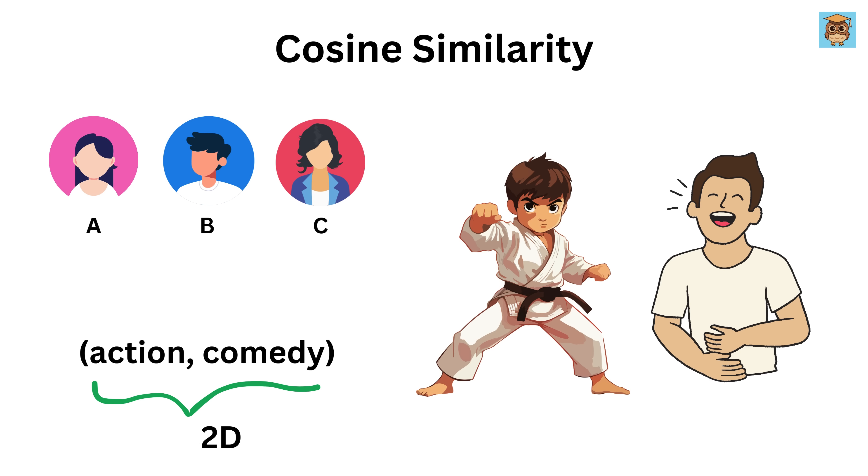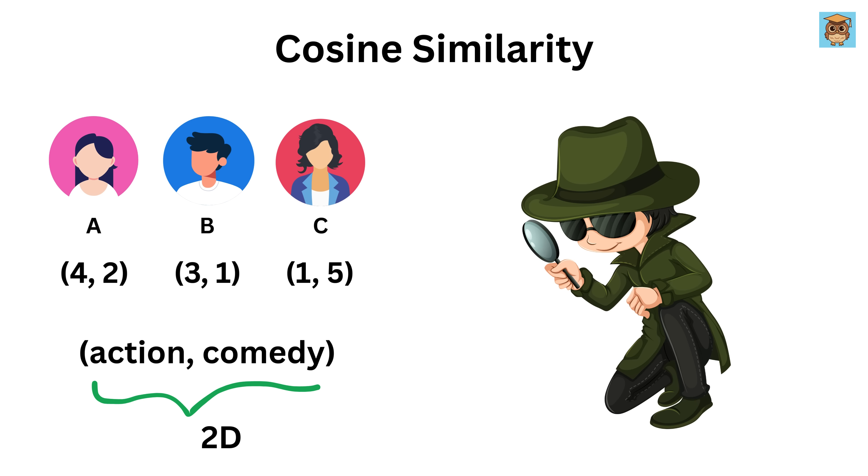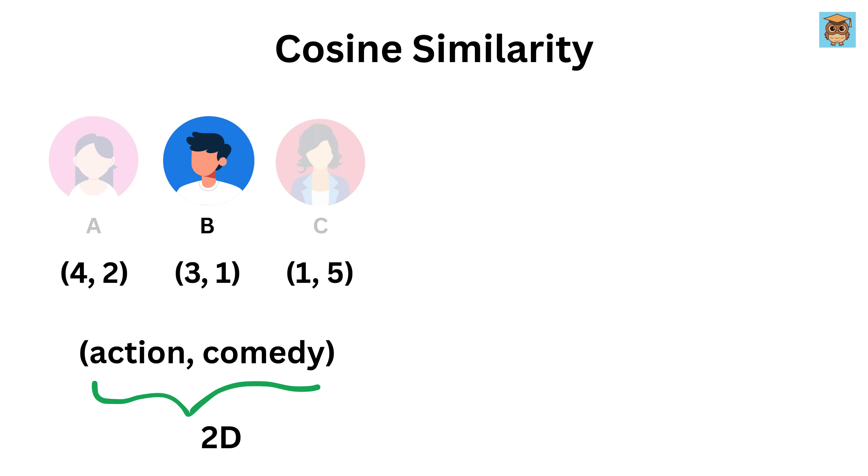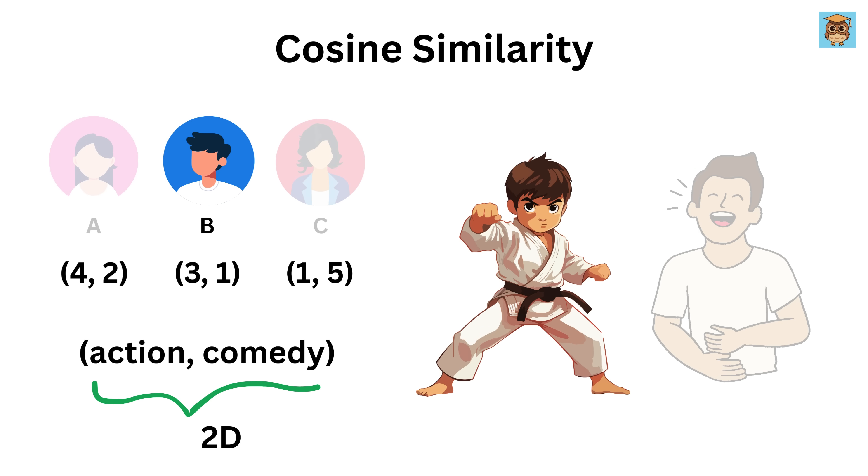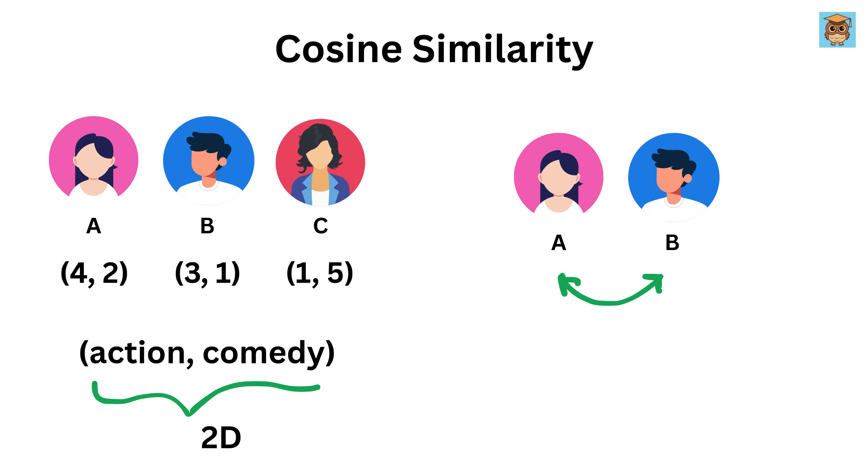Person A likes a lot of action and some comedy, so rating is 4,2. Person B rating is 3,1, and Person C rating is 1,5. Now obviously since this example involves only two genres, it is super easy to see just by observation, without any maths, that Person B also likes action more than comedy, but Person C likes more comedy than action. So Person B is more similar to Person A, and Person C is less similar to Person A.